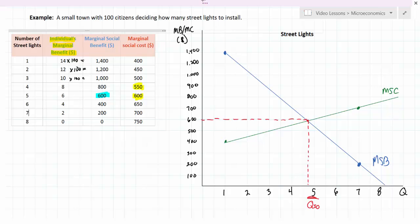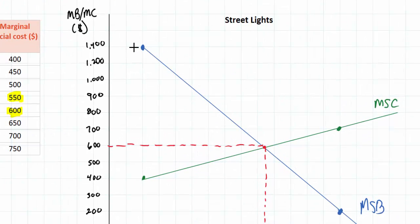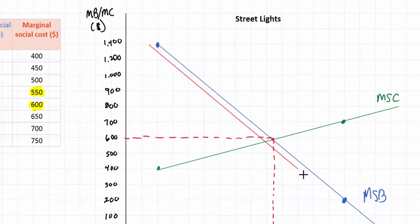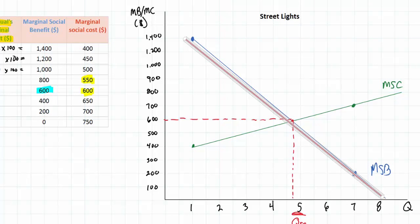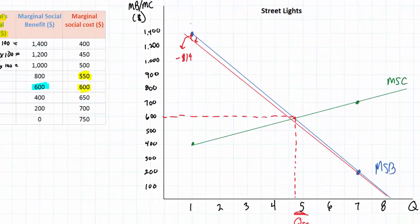Every individual in this city has an incentive not to pay for these street lamps once they have been provided. Let's show the effect of a single individual refusing to pay. If one individual refused to pay, the marginal social benefit would be slightly lower. We could subtract the fourteen dollars that an individual is willing to pay for the first street lamp, resulting in a slight downward shift of demand. If one individual acted like a free rider, we could still have a nearly socially optimal number of street lamps — just a minuscule decrease in quantity from QSO.